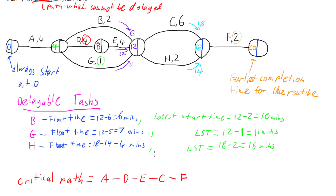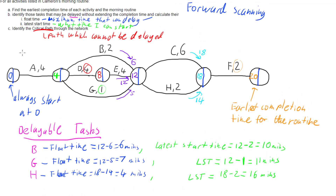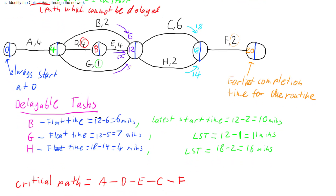The critical path means I have to start A at zero, D at four, E at eight, C at twelve, and F at eighteen minutes, to finish at that earliest completion time of twenty minutes. So that's forward scanning. The trick is simple: split nodes in two, work out the earliest completion time of each node, then identify which things can be delayed, how long you can delay them for, how late you must start them, and what the critical path through the network is - the important sequence that cannot be delayed and must happen on time, every time.